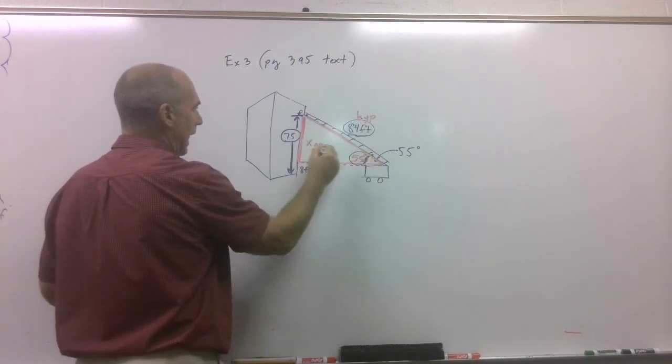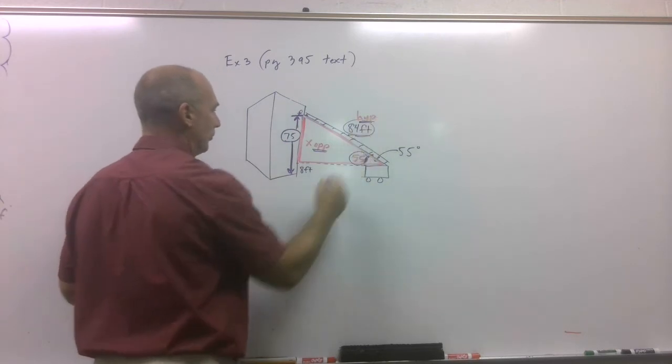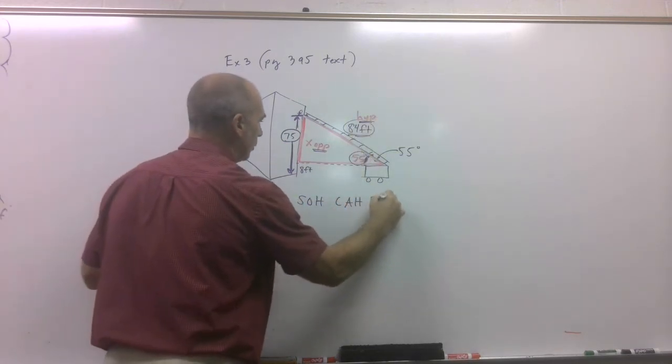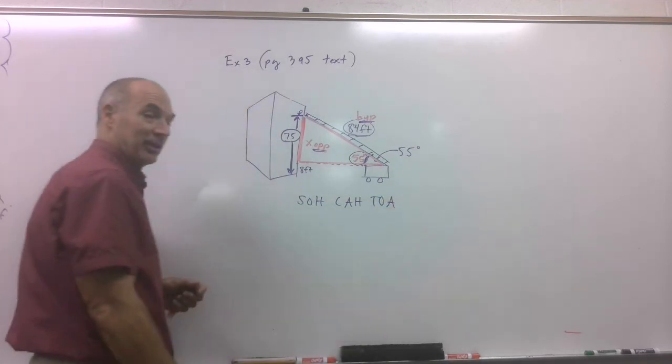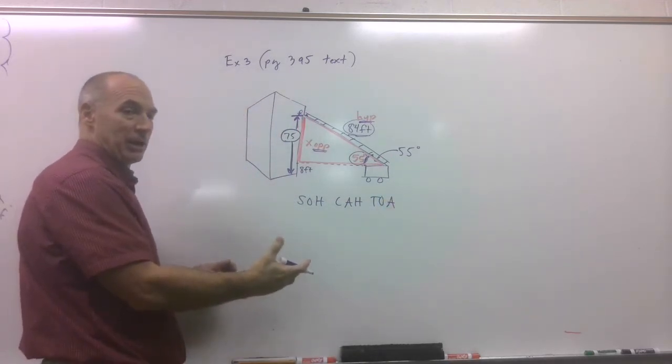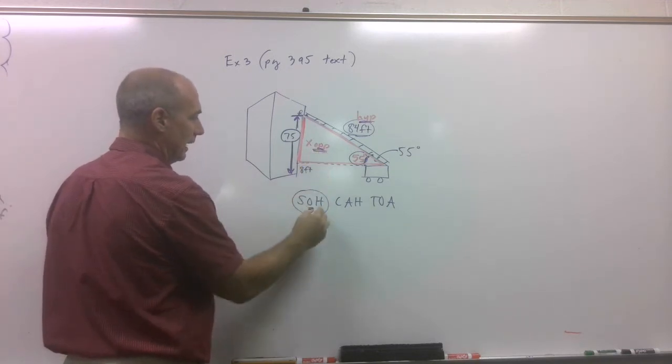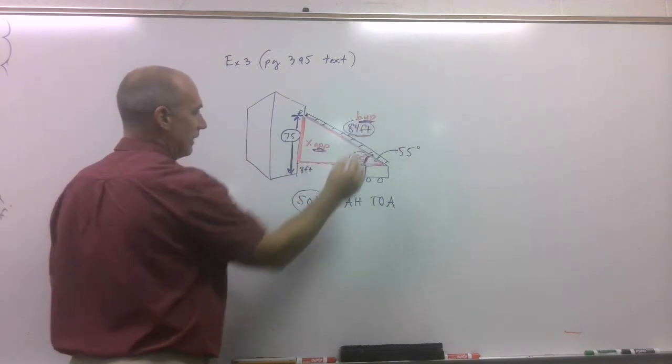So let's concentrate on that red triangle. Here's my angle. This is my opposite side. This is my hypotenuse. So in the world of trig, we've got SOH, CAH, TOA, we have to make a big decision. Which trig function is going to be our helper? Well, in this case, it's going to be sine, because we're using opposite and hypotenuse.